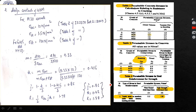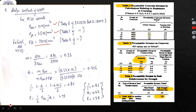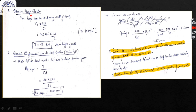We calculate the design constants for working stress method. From IS 3370 Part 2: Table 1 gives sigma_ct = 1.5 N/mm² for M30 concrete; Table 2 gives sigma_cbc = 10 N/mm² for M30; Table 4 gives sigma_st = 130 N/mm² for HYSD bars. Using these, we calculate M, K, J, and R.